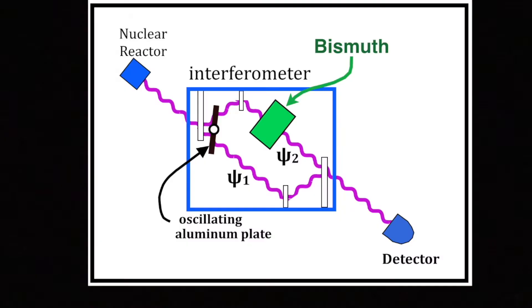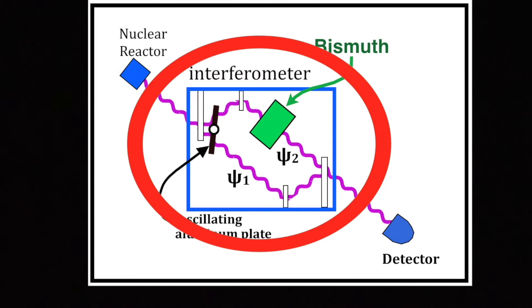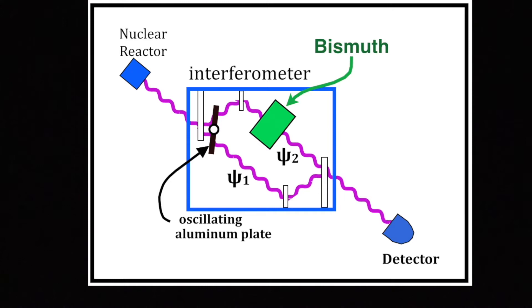They took neutrons from a nuclear reactor in the upper left, which came down and entered the blue rectangle, which is a neutron interferometer, within which they bounced off various silicon blades. The blades split the beam into two beams, ψ1 on the bottom, ψ2 on the top, and then the two beams were recombined with each other on the right-hand side before they left the interferometer and were seen by a detector.